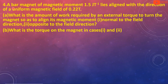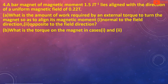A bar magnet of magnetic moment 1.5 joule per tesla lies aligned with the direction of a uniform magnetic field of 0.22 tesla. First question: what is the amount of work required by an external torque to turn the magnet so as to align its magnetic moment normal to the field direction?